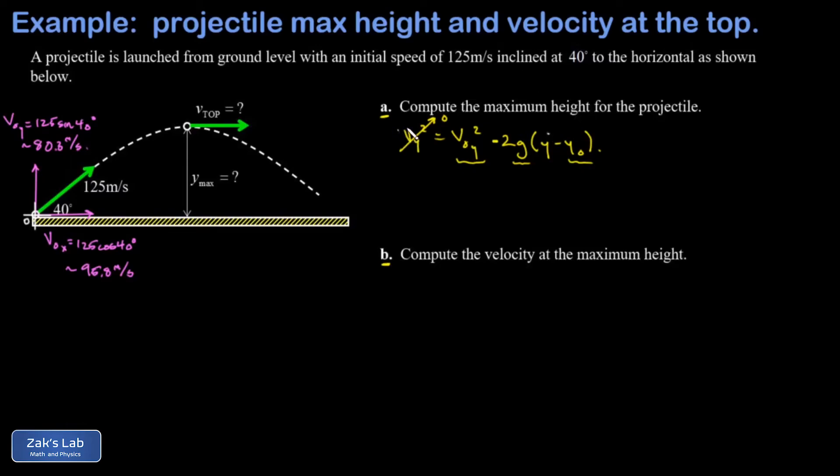So I plug things in. My initial y velocity is 80.3, g is approximately 9.8, my initial y coordinate is zero, and my unknown value of y is the only thing remaining.